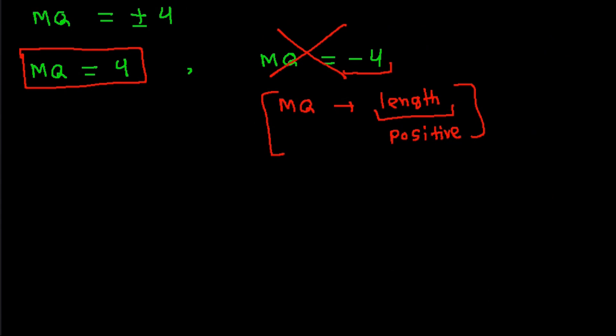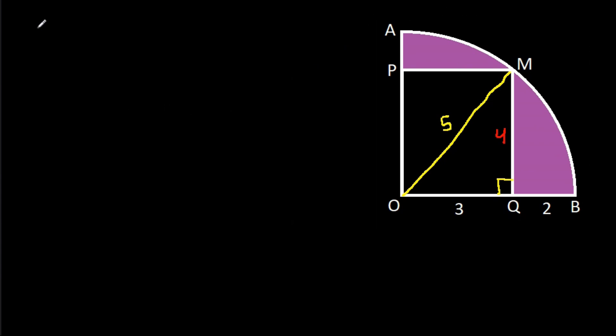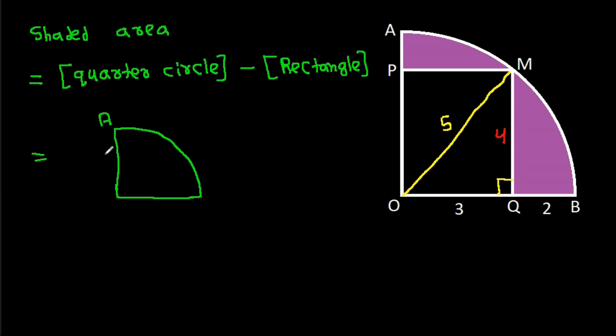Now, shaded area will equal area of quarter circle minus area of rectangle. In the quarter circle AOB, the radius OB is 5. In the rectangle PMQO, MQ is 4 and OQ is 3.